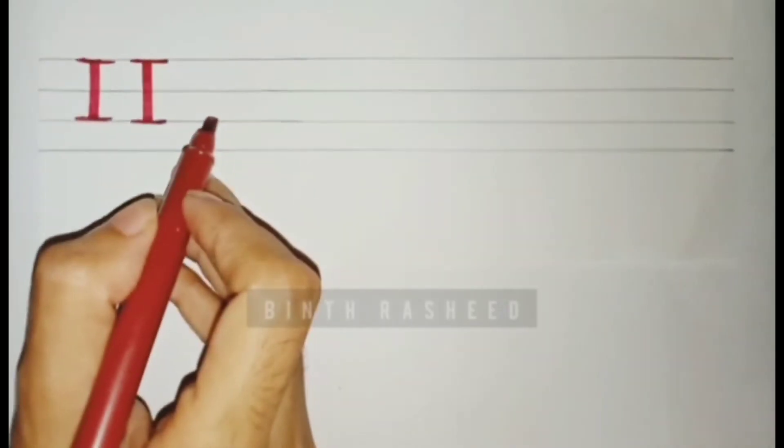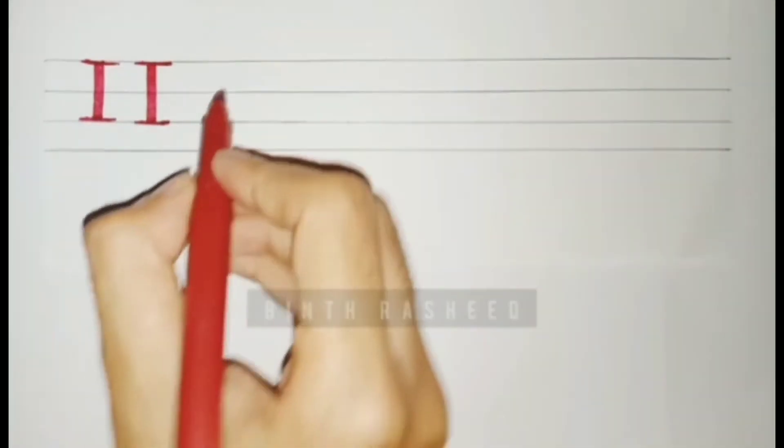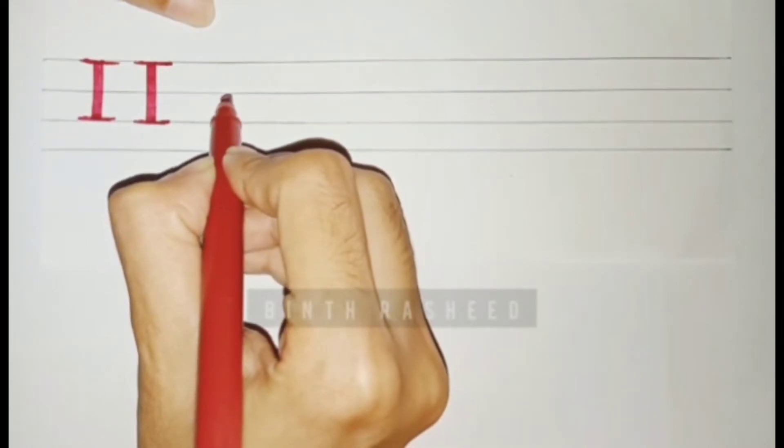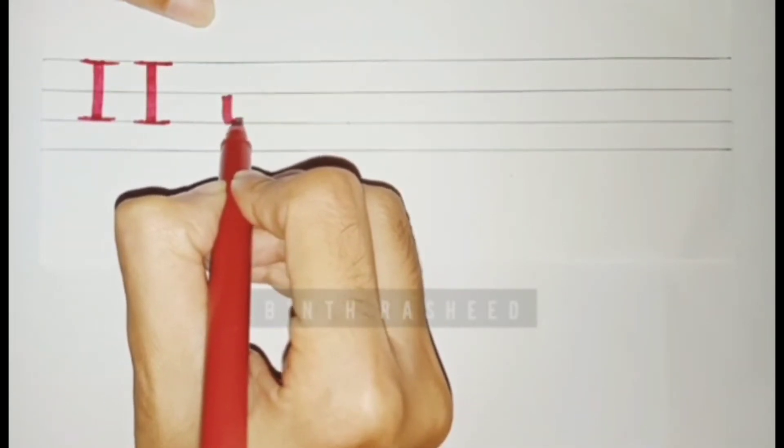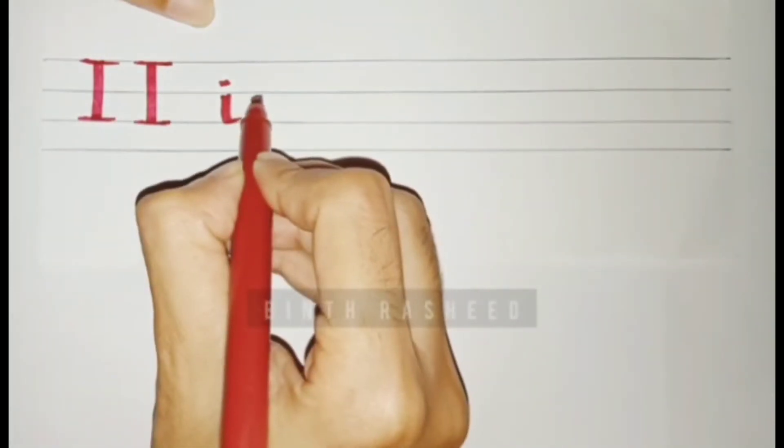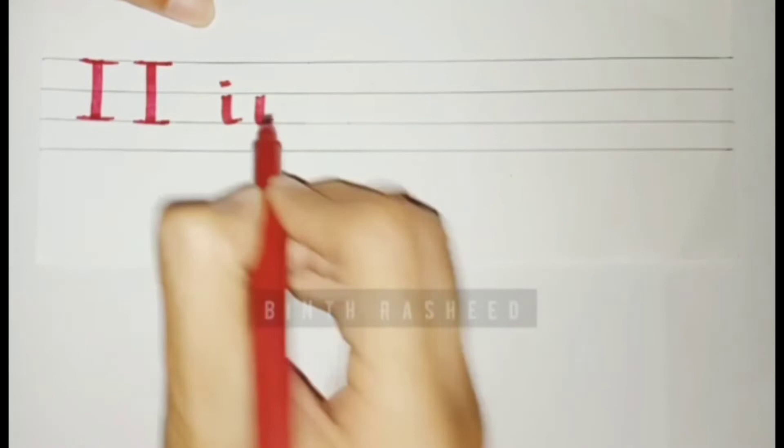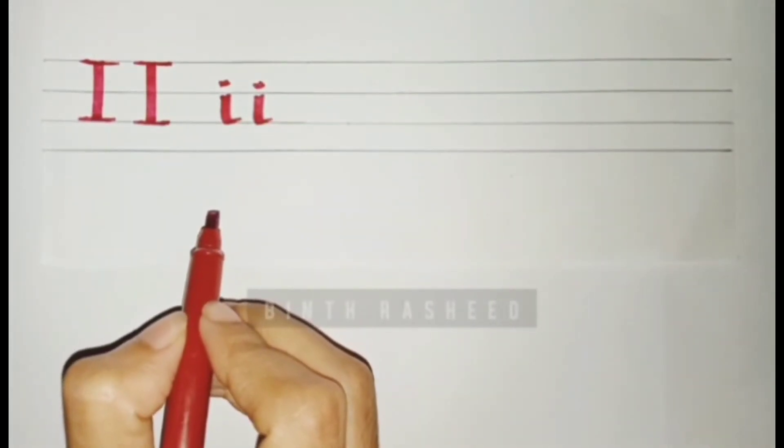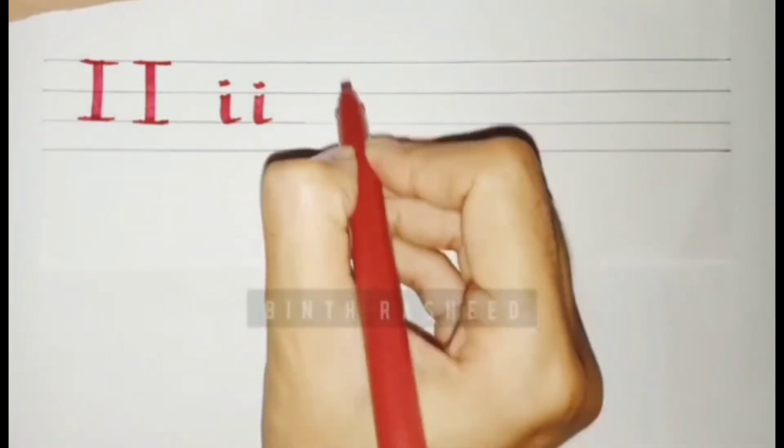Moving into small I, from the middle you draw a small line downwards ending in a curl and a dot at the top, this way. Okay, now that is small I.